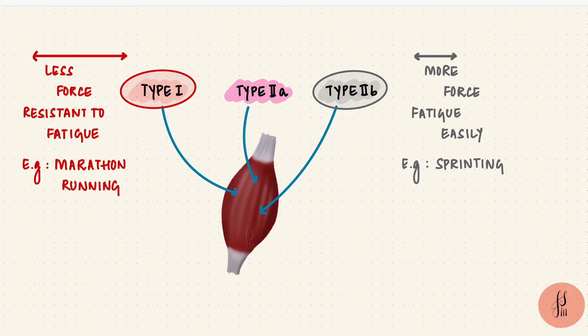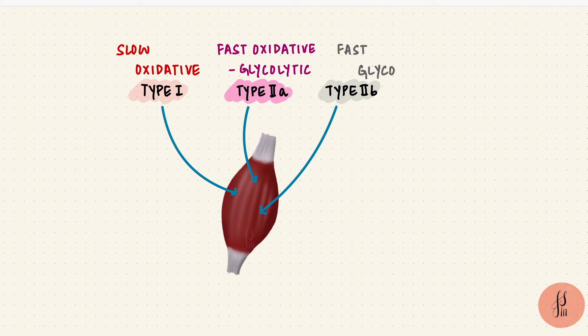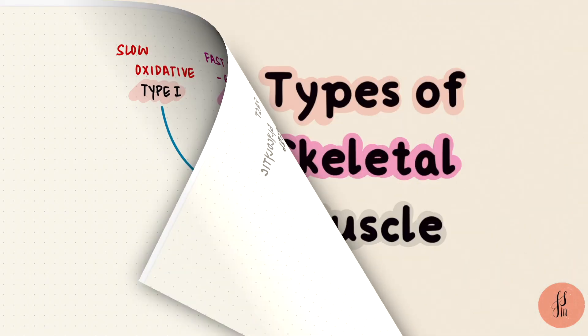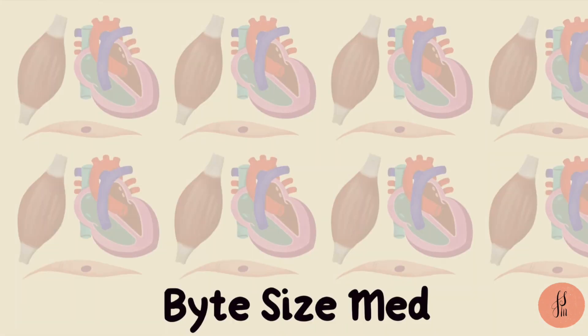So every muscle has a different proportion of type 1, type 2a, and type 2b fibers — that's the slow oxidative fibers, the fast oxidative glycolytic fibers, and the fast glycolytic fibers. And those are some of the differences between the skeletal muscle types. I hope this video was helpful. If it was, you can give it a like and subscribe to my channel. Thanks for watching and I'll see you in the next one.